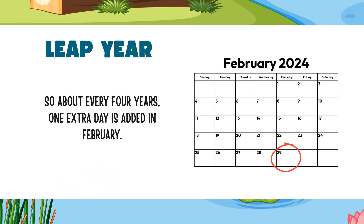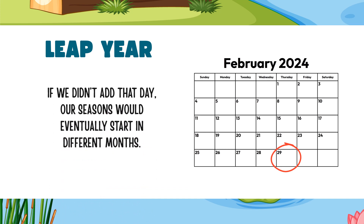So, about every four years, one extra day is added in February. February normally has 28 days, but this year — leap year — it has 29 days. If we didn't add this extra day, our seasons would eventually start in different months of the year.